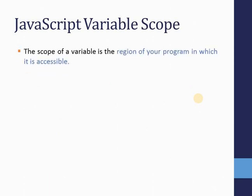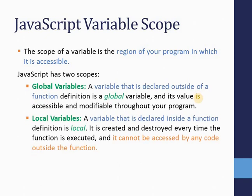The scope of a variable is the region of your program in which it is accessible — this concept also exists in C. A variable is like a container for your data, but you cannot refer to that container from anywhere; there are certain rules and limitations. In JavaScript, a variable has two scopes: global and local.